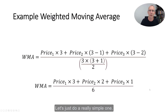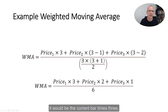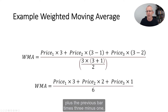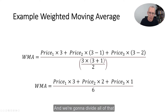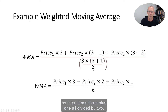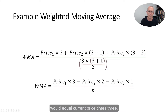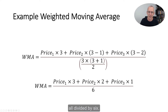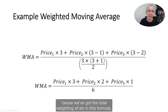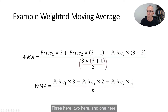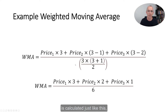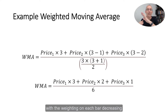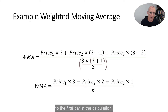Let's do a practical example with a 3-bar weighted moving average. It would be the current bar times 3, plus the previous bar times (3 minus 1), plus the bar before that times (3 minus 2), all divided by 3 times (3 plus 1) divided by 2. That simplifies to: WMA equals current price times 3, plus previous bar's price times 2, plus the bar before that times 1, all divided by 6. We divide by 6 because that's the total weighting in the formula — 3, 2, and 1 — bringing it back to a true average.